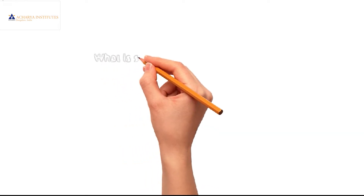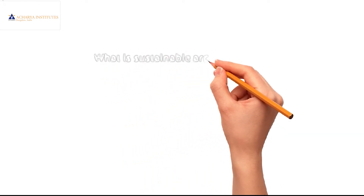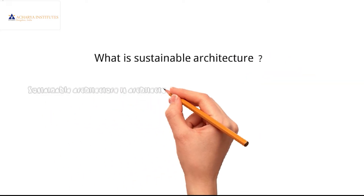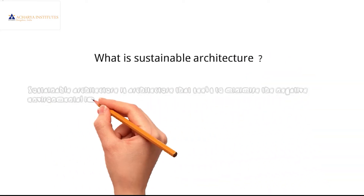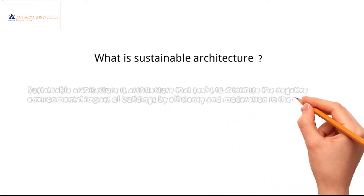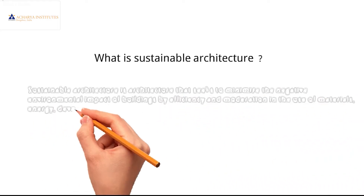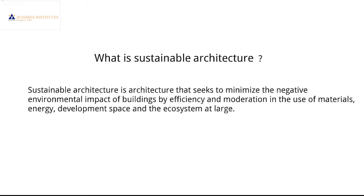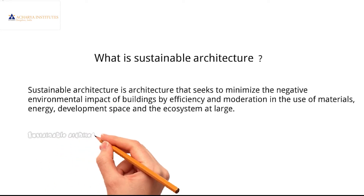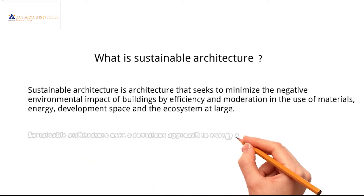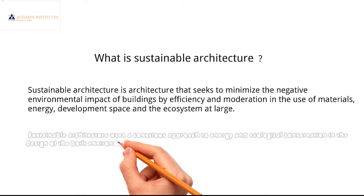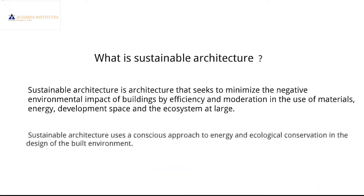What is sustainable architecture? Sustainable architecture is the one that seeks to minimize the negative environmental impact of buildings by efficiency and moderation in the use of materials, energy, development space, and the ecosystem at large. Sustainable architecture uses a conscious approach to energy and ecological conservation in the design of the built environment.